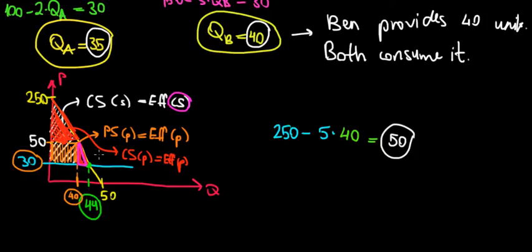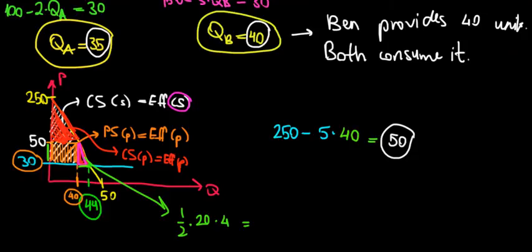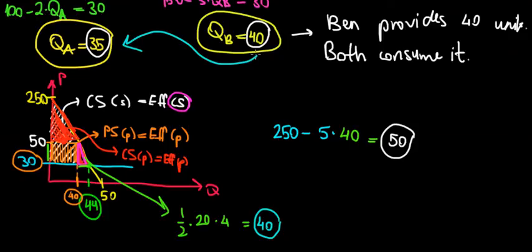This lost triangle represents efficiency we no longer have. Its area is one-half times the height (50 minus 30 = 20) times the length (44 minus 40 = 4), so 20 times 4 is 80 divided by 2, equaling 40 euros. Forty euros worth of value to society is lost due to under-provision of the public good, because Ben doesn't account for the benefit his provision gives to N.